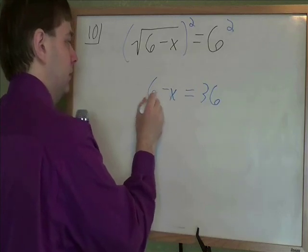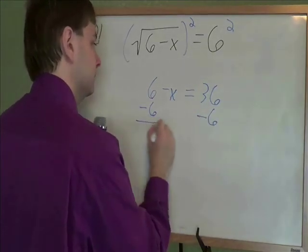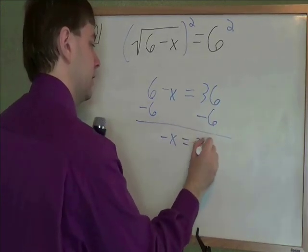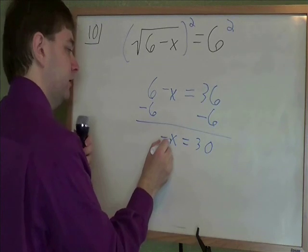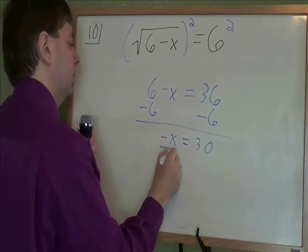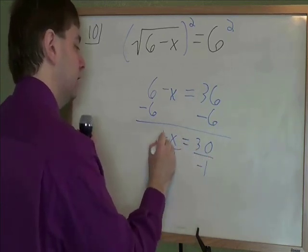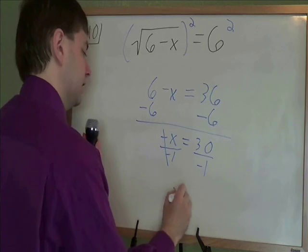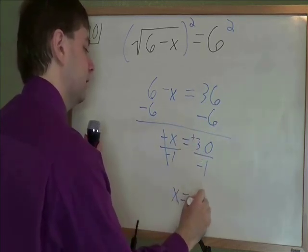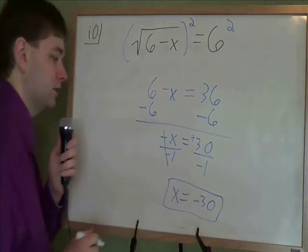So to get x by itself, you need to get rid of that 6. We subtract 6 on both sides. Gives us negative x equals 30. Now if we have negative x, there's nothing wrong with that, but we're not done yet. We need to get rid of that negative. We do that by dividing by negative 1. Negative divided by negative is positive x. Positive divided by negative is negative. x equals negative 30. And that's our answer.